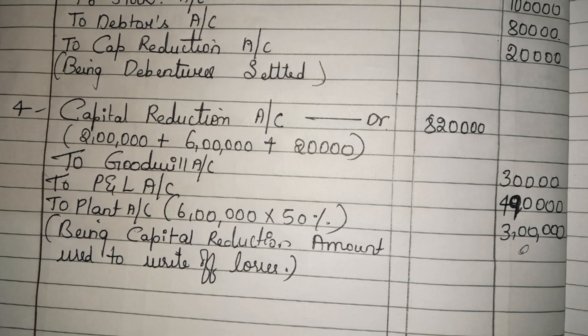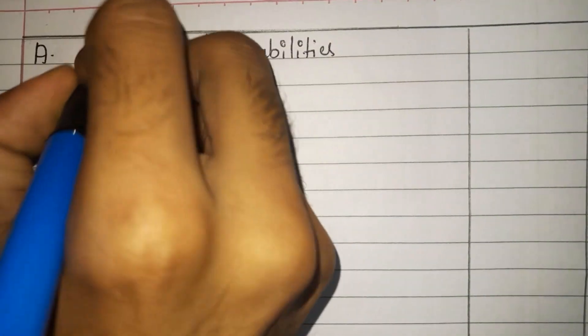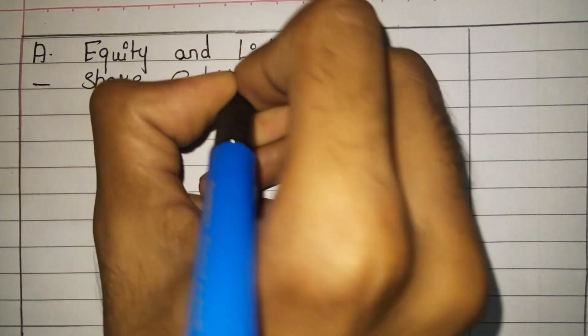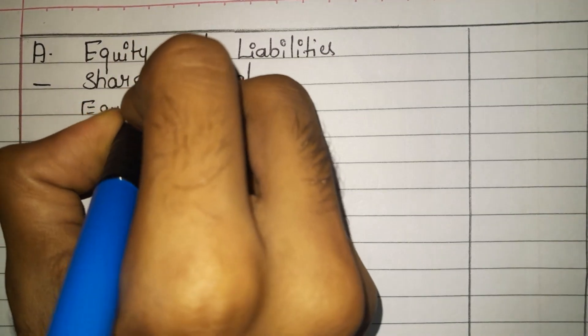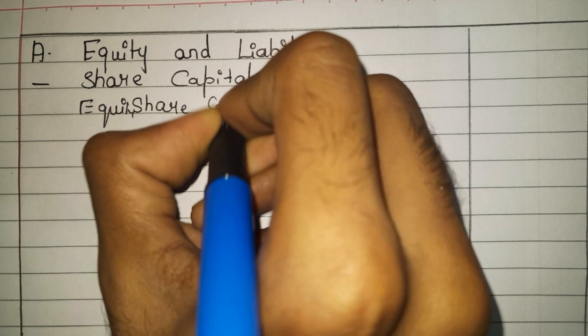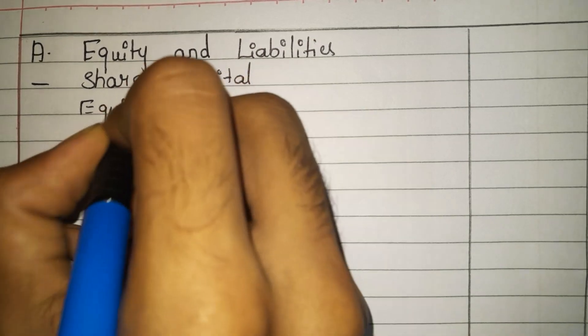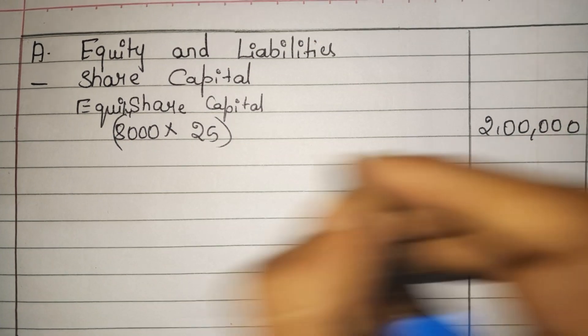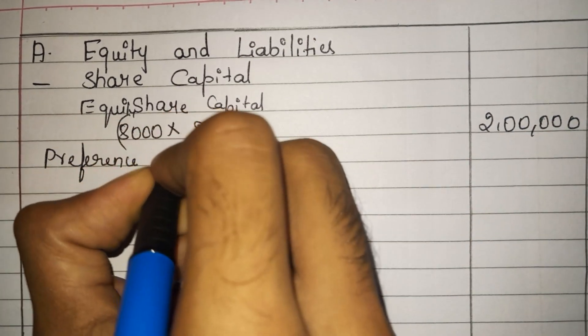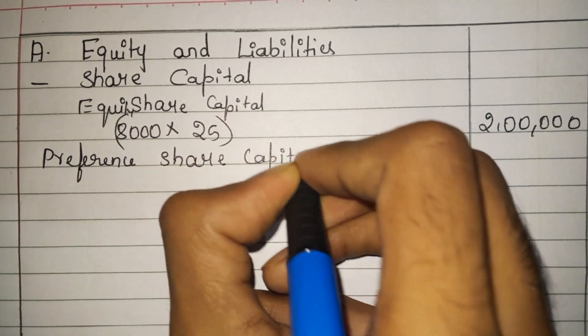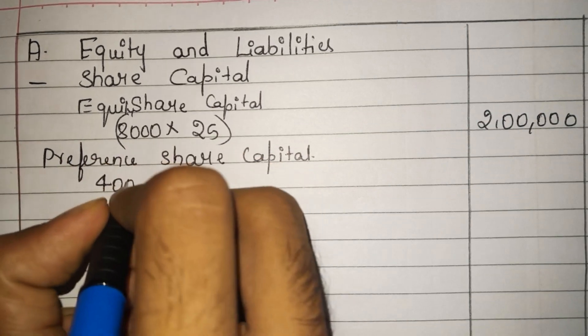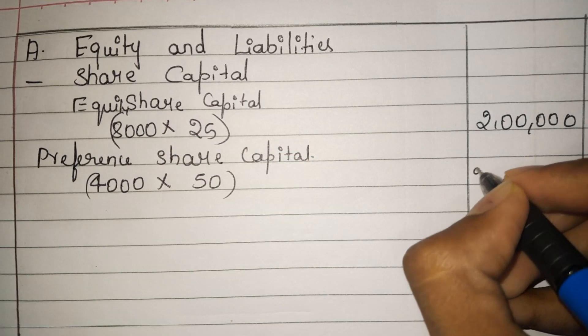Now let us prepare the balance sheet. The first component is equity and liabilities. Under that, first we take share capital. Equity share capital: 8000 equity shares of rupees 25 each equals 2 lakh rupees. Next, preference share capital: 4000 preference shares of rupees 50 each, which is also 2 lakh rupees.